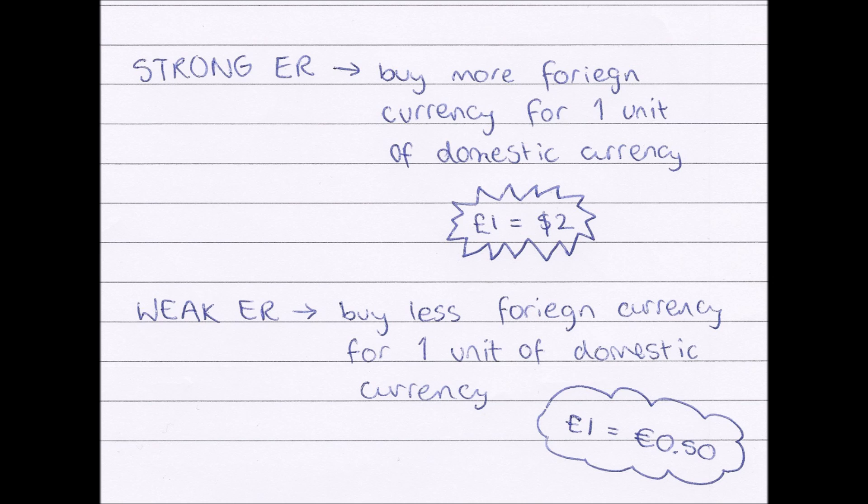With a weak exchange rate, everything works the opposite way. Say a packet of pencils costs one pound in Britain and one euro in France. If I'm in Britain with a pound, I can buy one packet of British pencils. However, if I wanted to import them from France, I could only get half a packet of pencils, because one pound is only equal to zero euros fifty. So therefore Britain will not import as much — imports will be lower.